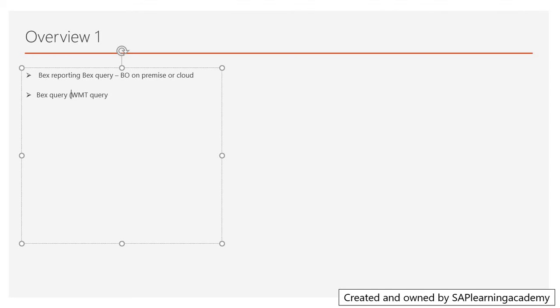In the BW modeler query designer, you can still make changes, but that will not be in BW modeler query analyzer. A basic and very important change is in BW HANA modeling: if you earlier did modeling in SAP GUI using transaction RSA1, you will no longer be able to access that option. All modeling now has to be done in SAP HANA Studio — everything you did in RSA1 will be converted into SAP HANA modeling.